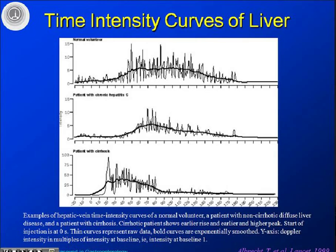This is one of the very first papers looking at the actual benefits of using these time-intensity curves — by Thomas Albrecht and co-workers, published in Lancet in 1999, where they studied the transient times in the liver.